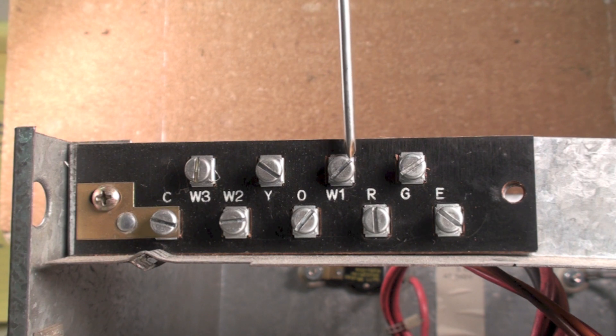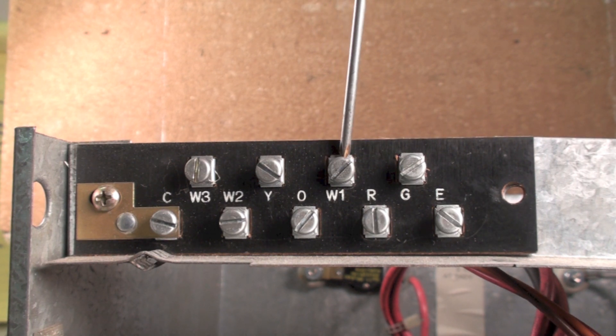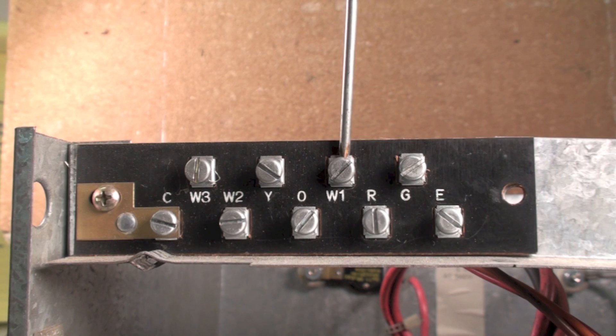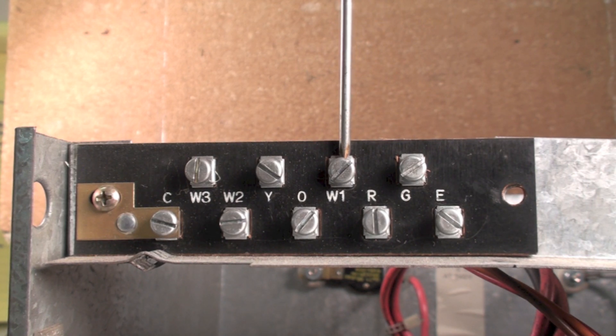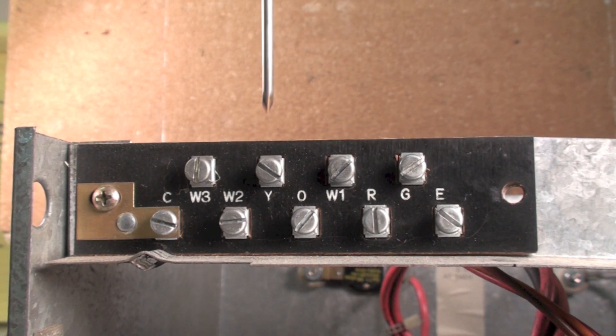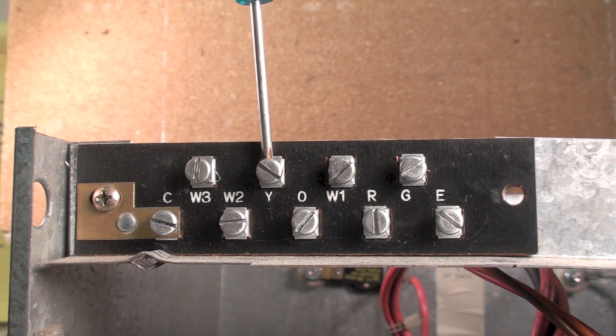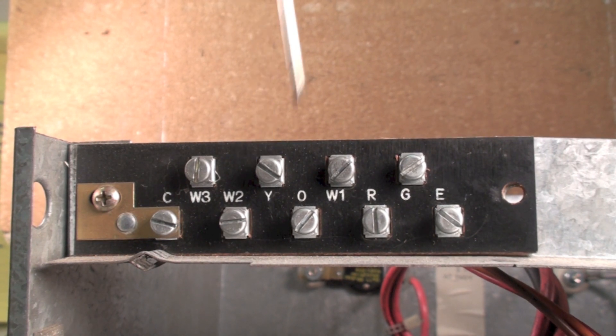But an electric furnace like this, generally W1 will be the only one used. Y will be first stage heat because that's turning on the contactor.